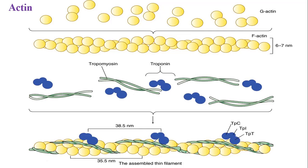The troponin complex is also attached to tropomyosin. Troponin is attached to tropomyosin at intervals of about 38.5 nanometers (385 Ångströms). Each troponin unit is linked to tropomyosin at this regular spacing.